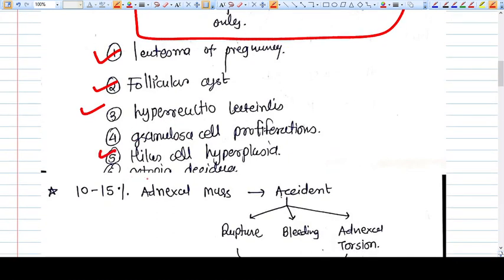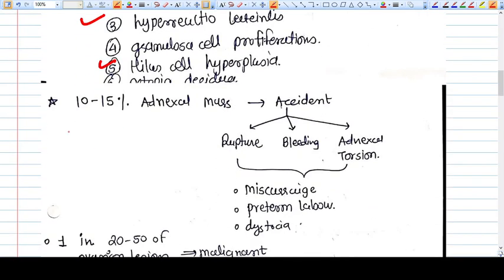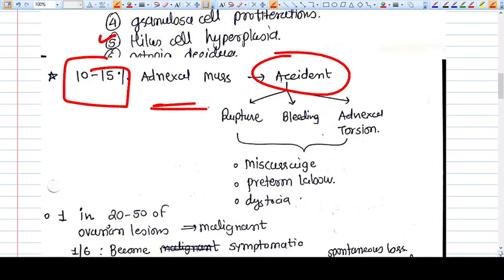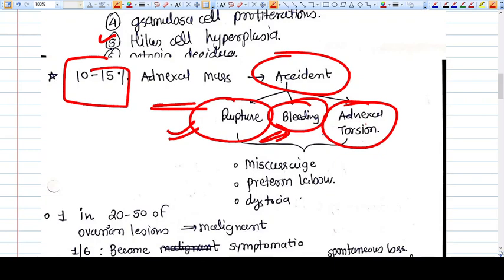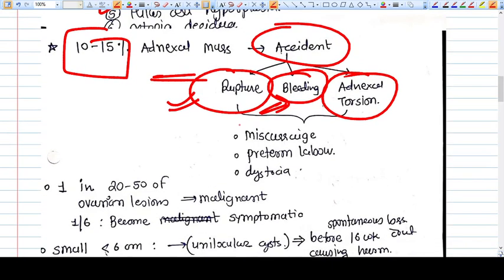Ten to 15 percent of adnexial masses go for accidental events. What we call accidental events is like these masses can rupture, can have bleeding, or can go for torsion. These accidents can occur with 10 to 15 percent of adnexial masses, leading to miscarriage, preterm labor, and dystocia.